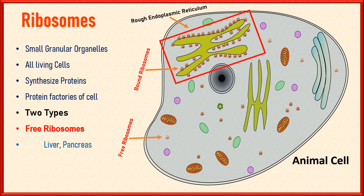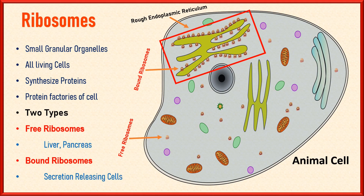Bound ribosomes, on the other hand, are attached to the endoplasmic reticulum, a complex network of membranes in the cell. These ribosomes synthesize proteins that are either incorporated into the cell membrane or transported to various organelles within the cell, including lysosomes, endosomes, and the Golgi apparatus. Bound ribosomes are prevalent in cells specialized for secretion or with a large membrane surface area, such as cells in the pancreas that secrete insulin.